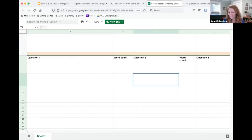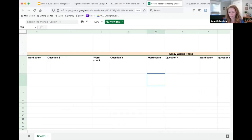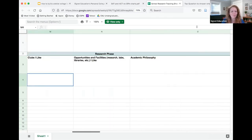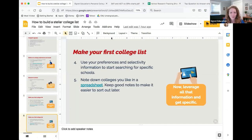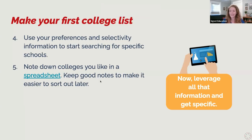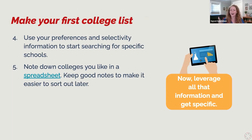The spreadsheet also has sections for essay questions and nitty-gritty details — you may deal with those later as you gear up toward applications. When you decide to take a school off your list, keep the notes — maybe gray out the row. You'll likely forget why you removed it and may keep returning to it. Just a note like 'the surrounding town wasn't safe' will save you a lot of trouble later.